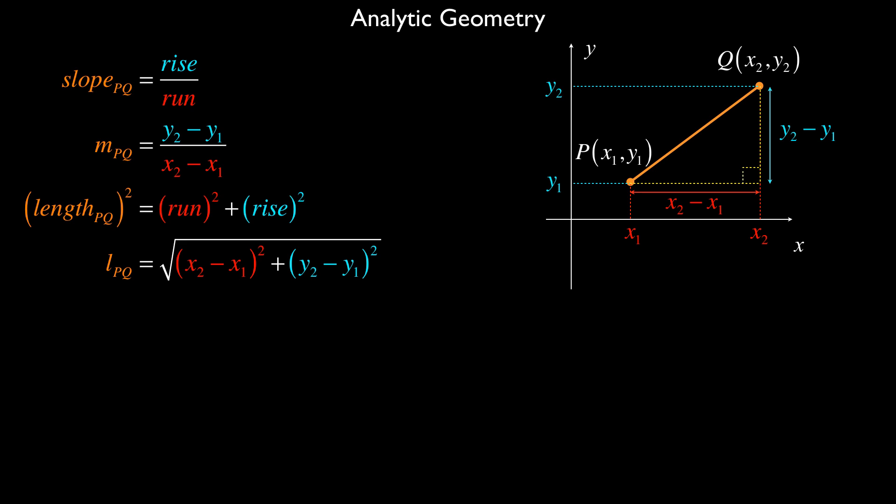The third one that we like to come up with, which is very useful when we talk about certain characteristics of triangles, is the midpoint formula. Let me just add a bit of a construction here. I've placed a point midway between P and Q. And for now, I'll mark that point M.